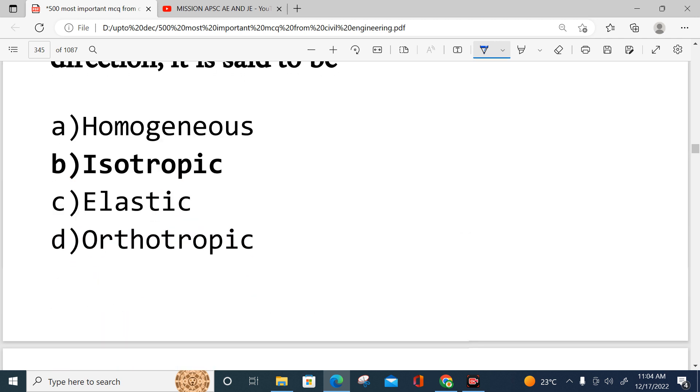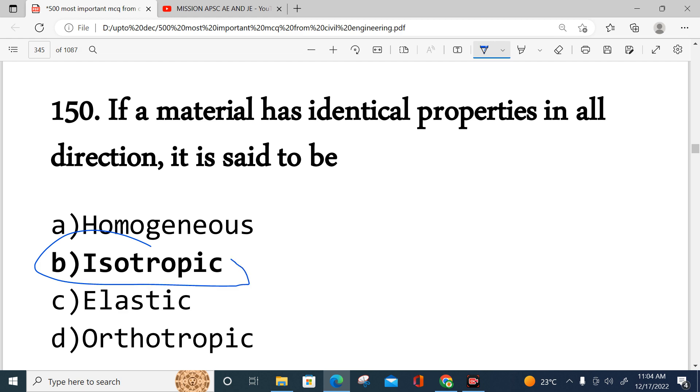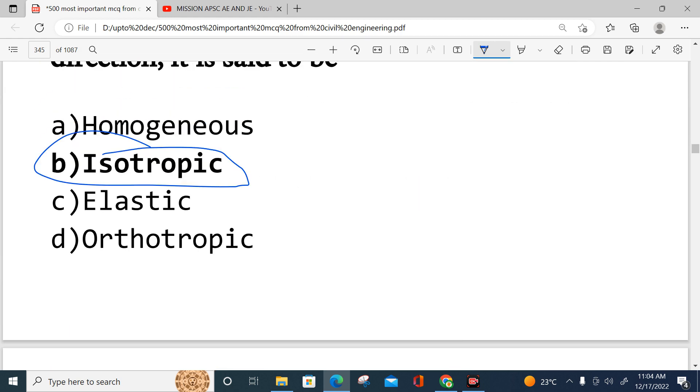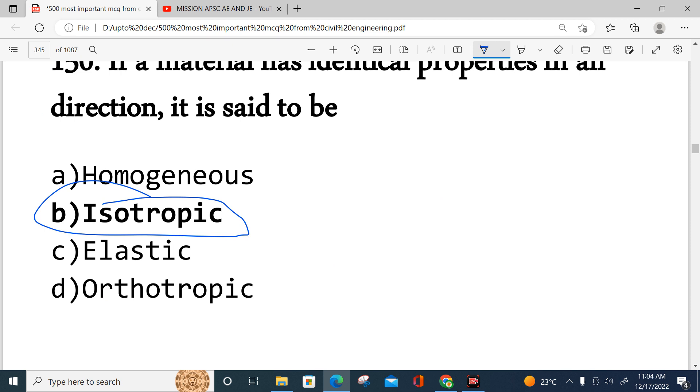Question 150: If a material has identical properties in all directions, it is said to be isotropic. So today we discussed 25 questions, so 150 questions are already over. In the next part we will move to question number 151. Please like the video, share with friends, subscribe to the channel. Thank you.